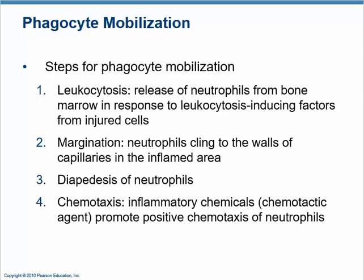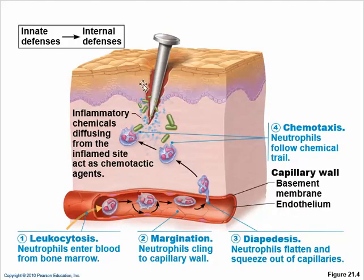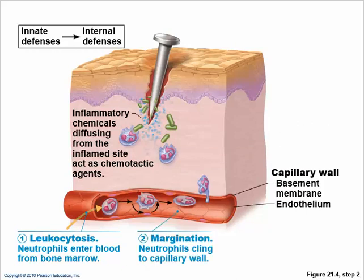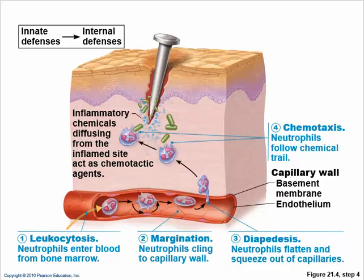The inflammatory chemicals then draw neutrophils via chemotaxis to where they're needed — 'chemo' means chemicals, and 'taxis' carries you to your destination like a taxi. So the sequence is: damage causes inflammatory chemicals, inflammatory chemicals cause more neutrophils to be made, the neutrophils stick via margination, squeeze through via diapedesis, and then travel to the site via chemotaxis. So: leukocytosis first, margination next, diapedesis, and chemotaxis.